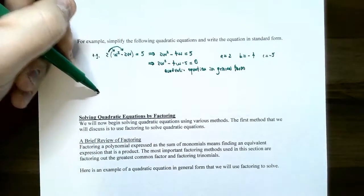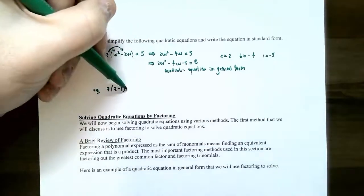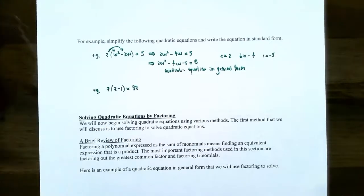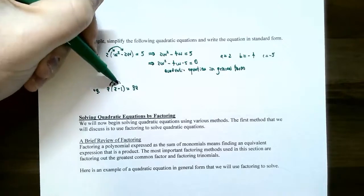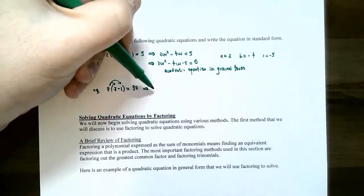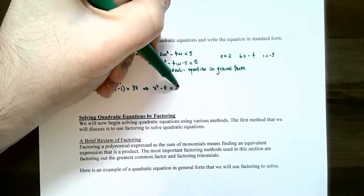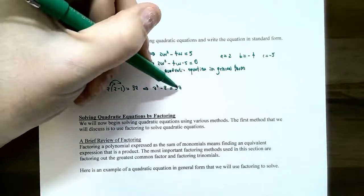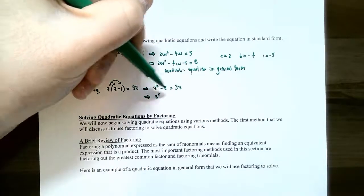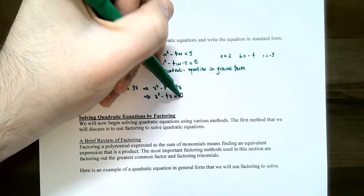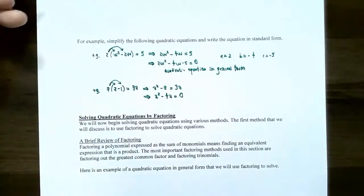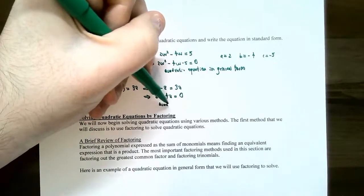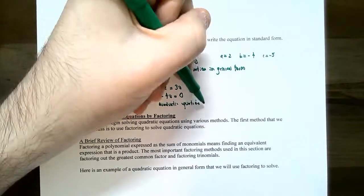Let's try another example: z times the quantity z minus 1 equals 3z. Notice that z is only raised to the first power, so we can't tell if it's linear or quadratic until it's simplified. Use the distributive property: z times z gives z squared, and z times negative one gives negative z, equal to 3z. The highest power on z is now two, so it is a quadratic equation, but not in general form yet.